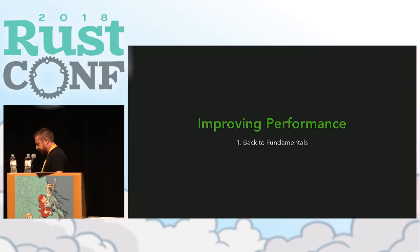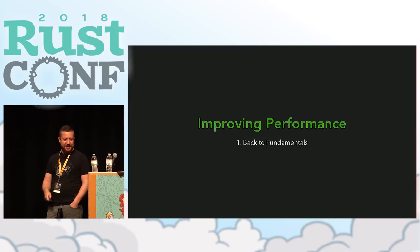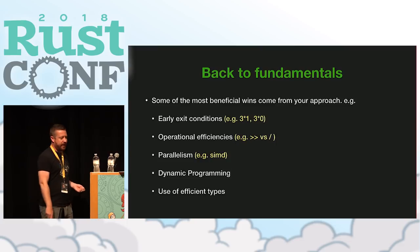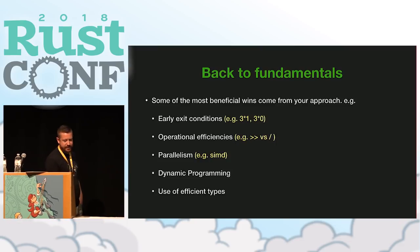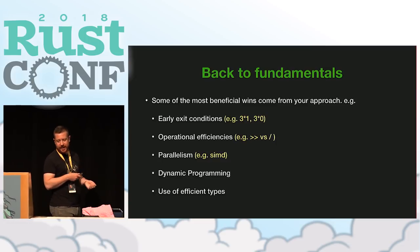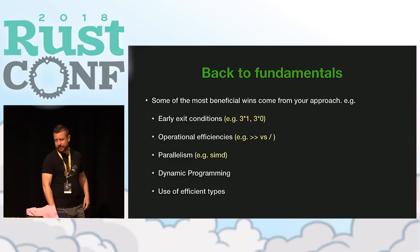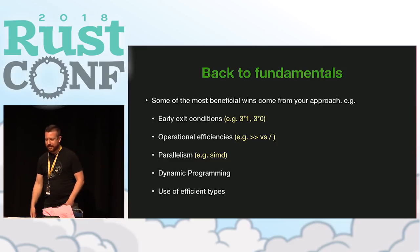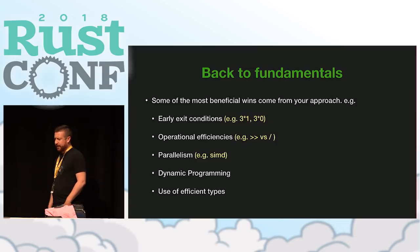Now for some practical things. This first one might seem like a cop-out because it goes back to fundamentals, but essentially some of the biggest wins come from re-looking at your approach. There are things like early exit conditions, operational efficiencies such as using bitwise shift instead of dividing by a power of two, parallel operations, dynamic programming, and use of efficient types. We'll go into use of efficient types a little more in this talk.